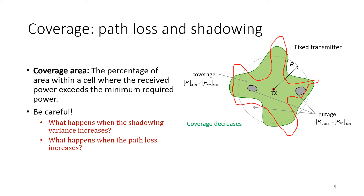One might think that higher path loss means less coverage, but this is not true. When we define a cell, we define it within the coverage area. If path loss increases, we must increase the transmitted power accordingly. Therefore, for a stronger path loss we start with a stronger transmitted power, so coverage would actually increase.